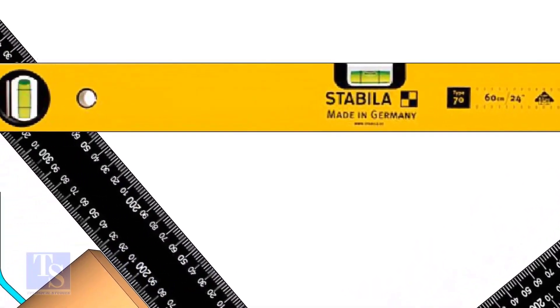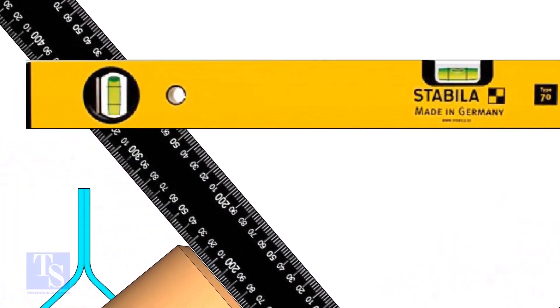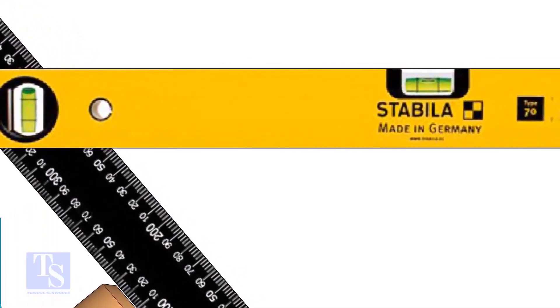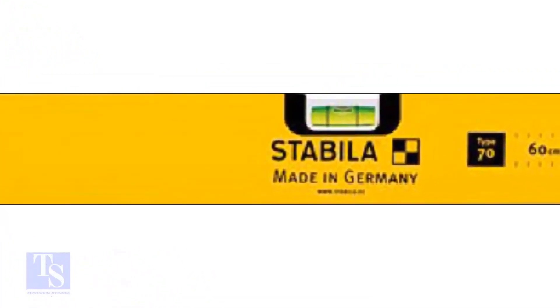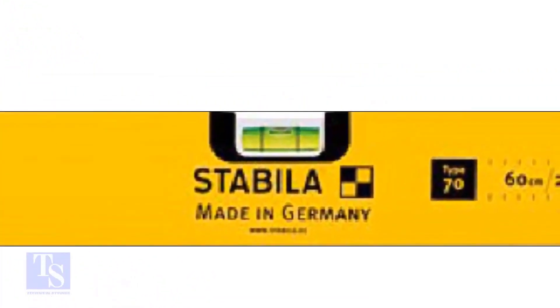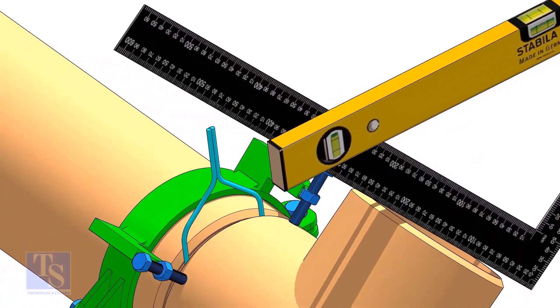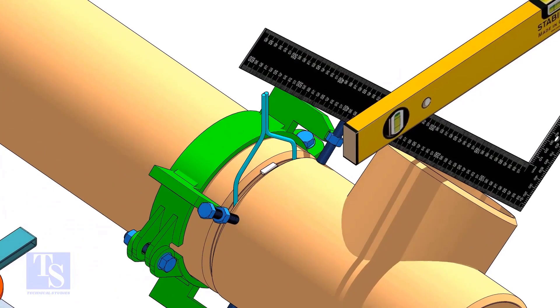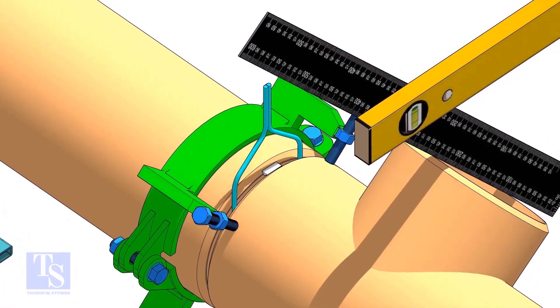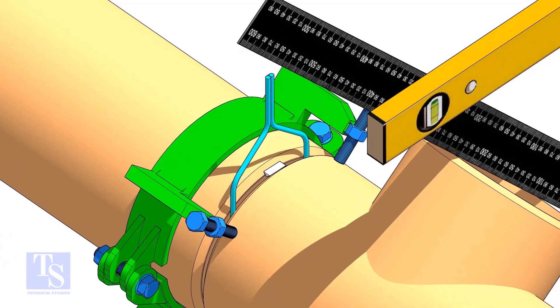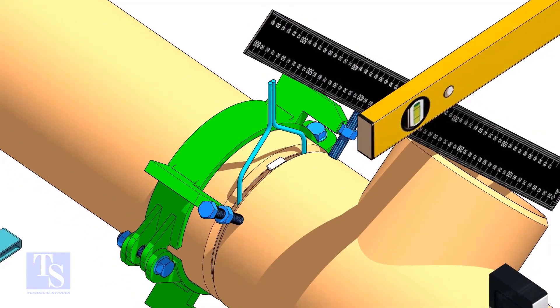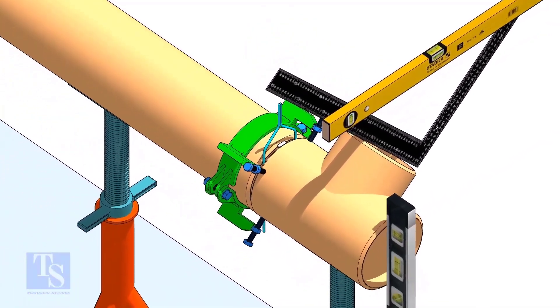Rotate the T, holding the right angle and the level bottle firmly, until the level bottle is in level. Tack weld on the top side of the joint. Check the end level of the T.